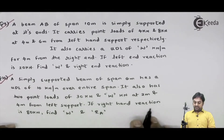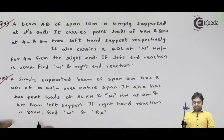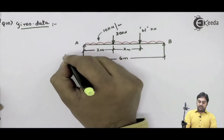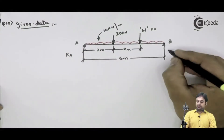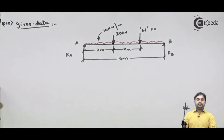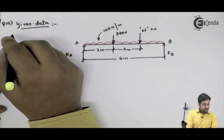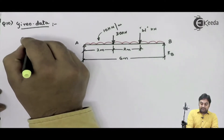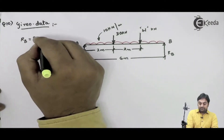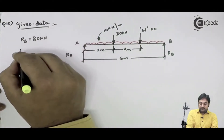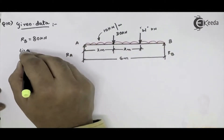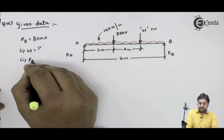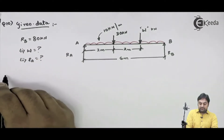If the right hand reaction is 80 kilonewton, find w and RA. Here RA will be my left hand reaction and RB is the right hand reaction. The right hand reaction is given as 80 kilonewton, meaning RB value is given. We have to calculate what is w and what is the value of left hand reaction RA — so these two are the questions.